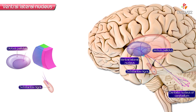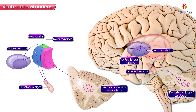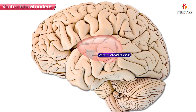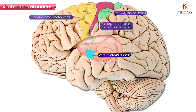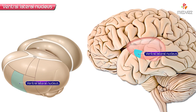The pallidal and nigral afferents terminate more commonly in pars oralis and pars medialis, while those from the cerebellum terminate in pars caudalis. The ventral lateral nucleus, like the ventral anterior nucleus, has reciprocal connections with the motor areas of the frontal lobe, especially with the primary motor cortex of the precentral gyrus.